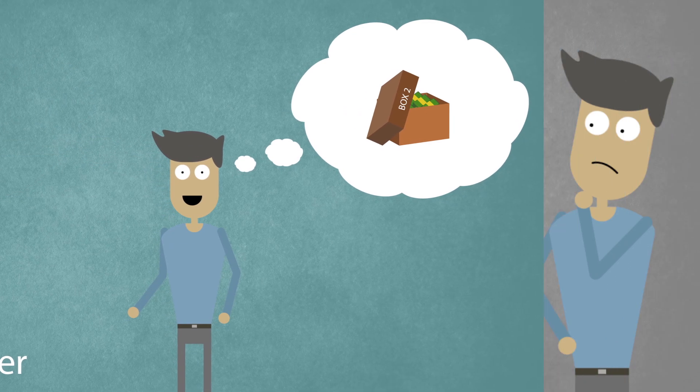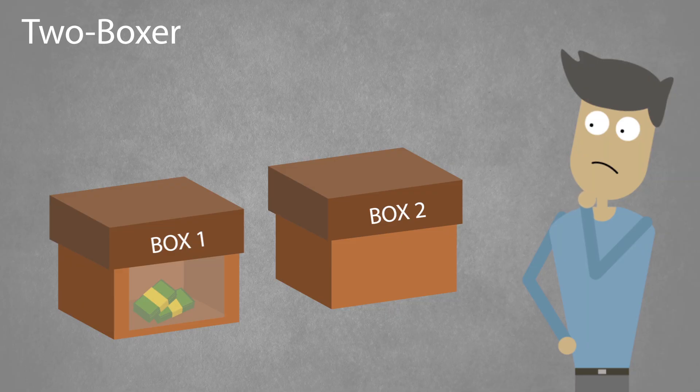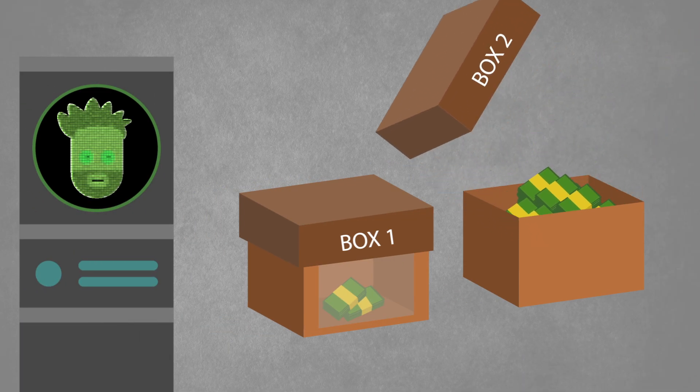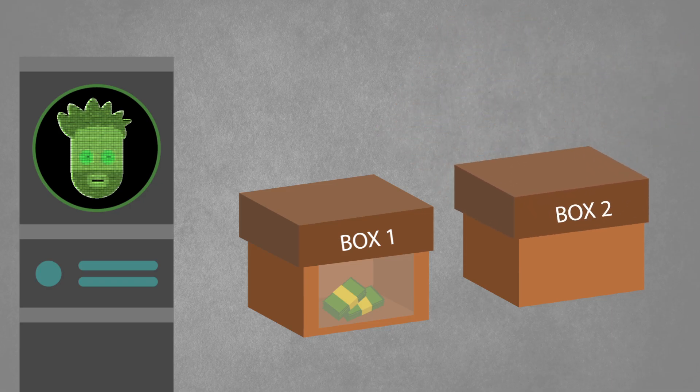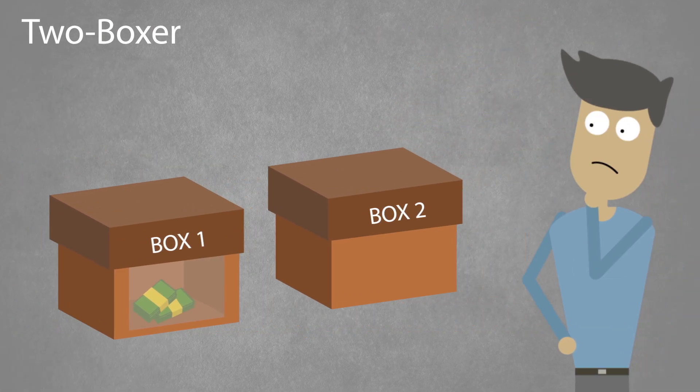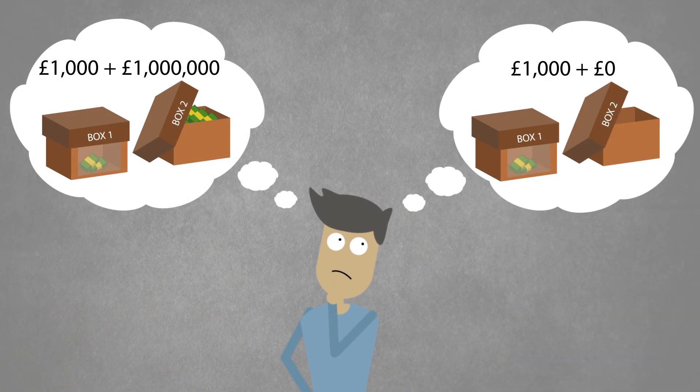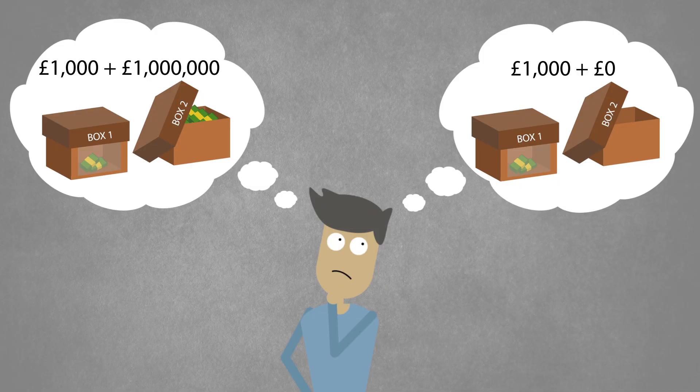But a two-boxer will say, when you make your decision standing in front of the boxes, the supercomputer has already made its prediction and has therefore already placed the million inside box two, or has left it empty. Therefore, taking both boxes can only maximize your reward, as you would either get a million plus a thousand, or zero plus a thousand. Whatever the supercomputer has predicted, you will end up with £1,000 more by choosing both boxes.